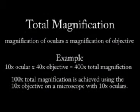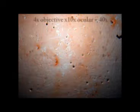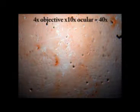When using the microscope, you will want to record the total magnification of each image that you observe. Total magnification is equal to the magnification of the oculars on the microscope times the magnification of the objective being used. The image here was observed with a 4x objective through 10x oculars for a total magnification of 40x.